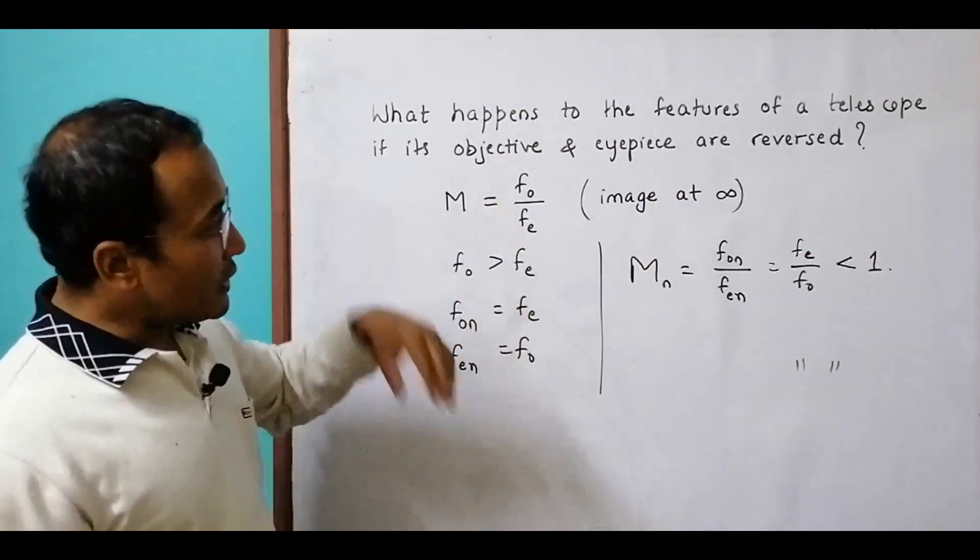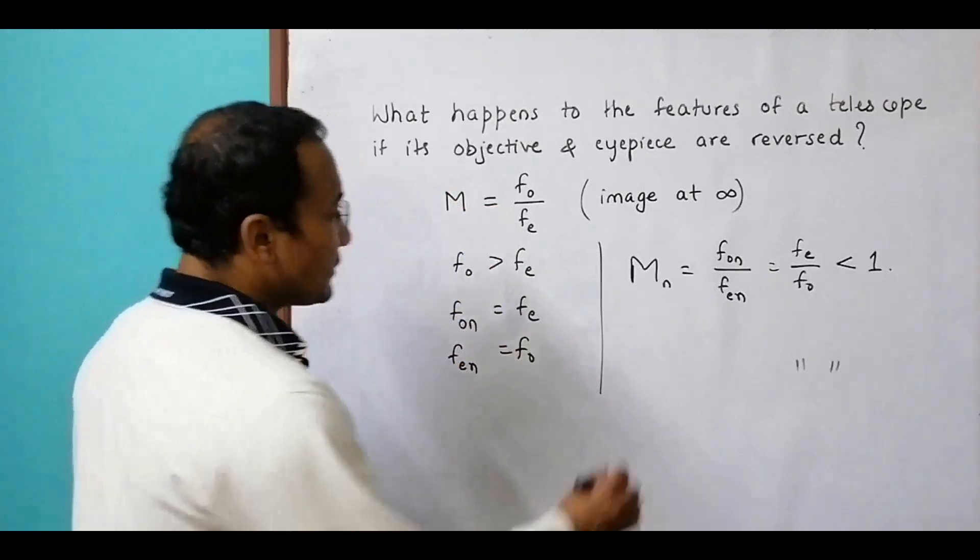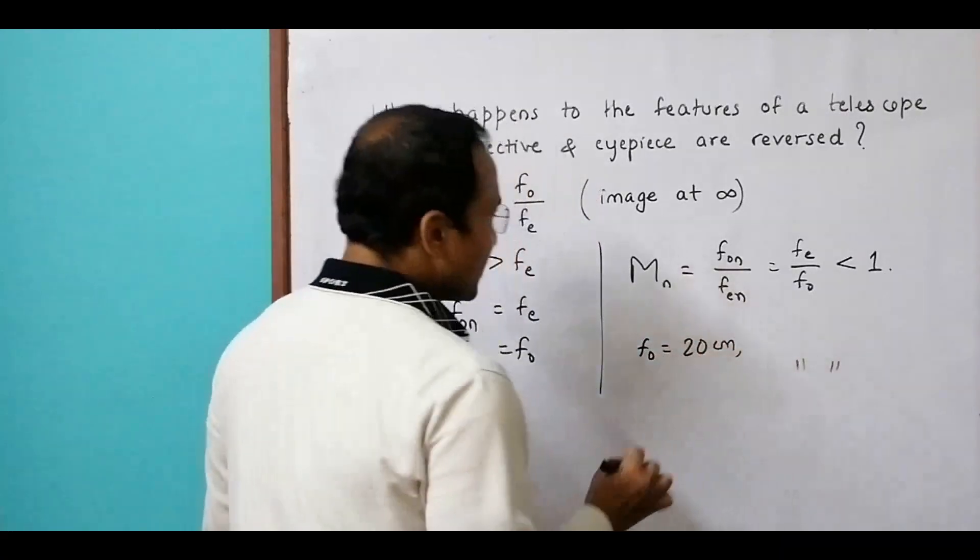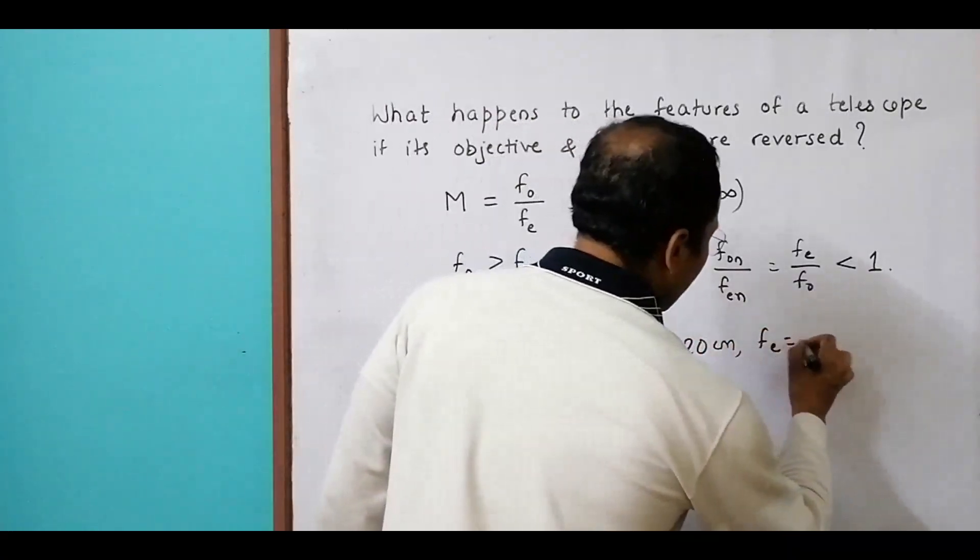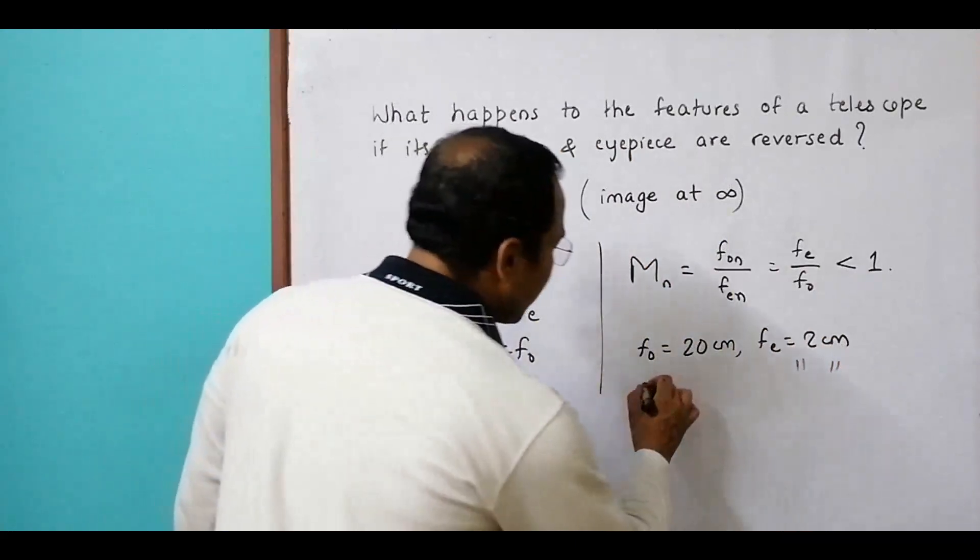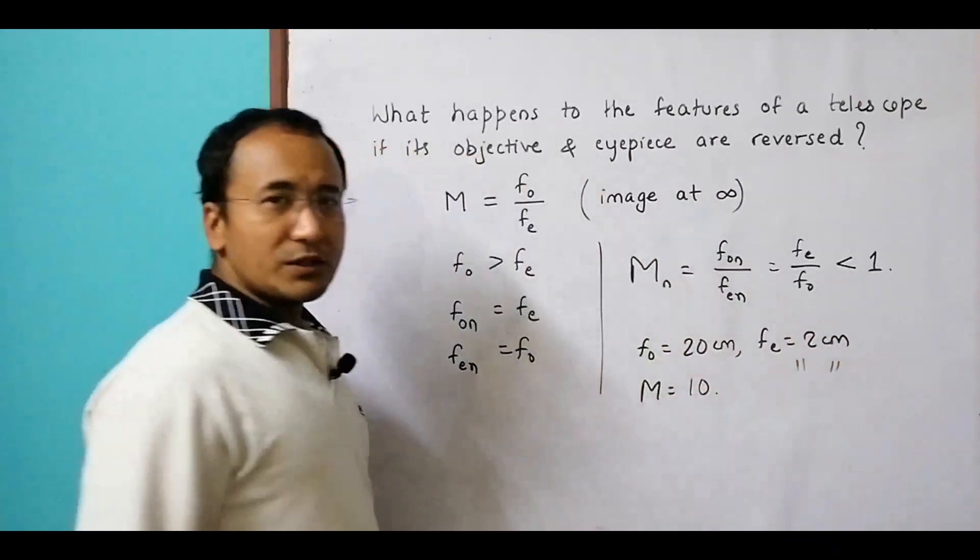Let's take an example. Let's say fo equals 20 centimeters and fe equals 2 centimeters. With that, the old magnification becomes M = 20/2 = 10.